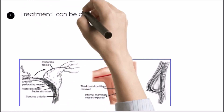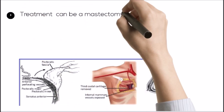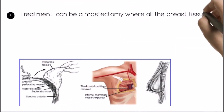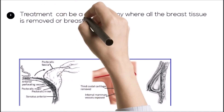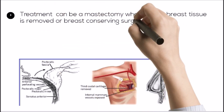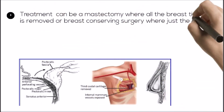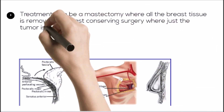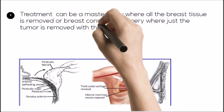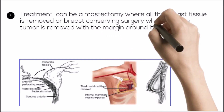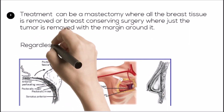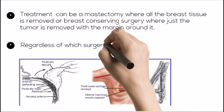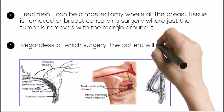Treatment of breast cancer involves surgery. That can be a mastectomy, where all the breast tissue is removed, or a breast conserving surgery, where just the tumor is removed with a small margin around it. Regardless of which surgery, the patient might be offered radiation afterwards.